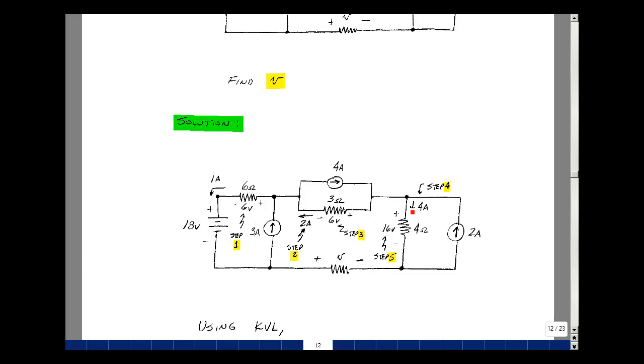And then knowing the resistance here, I can find the voltages, 4 amps times 4 ohms. That's my fifth step.